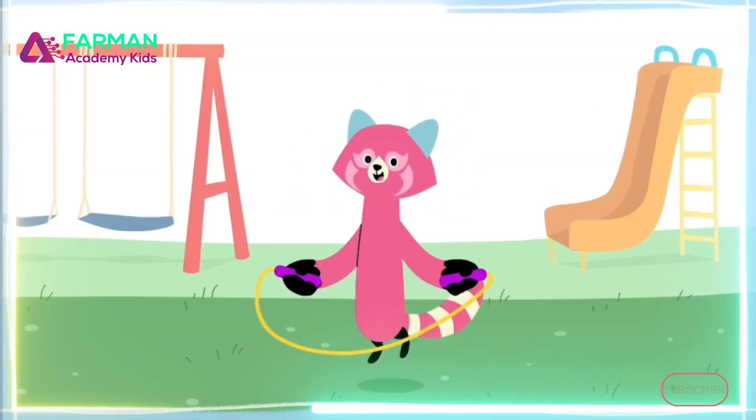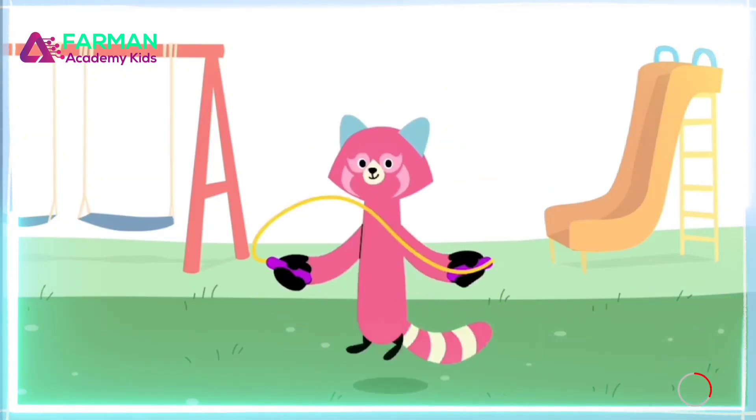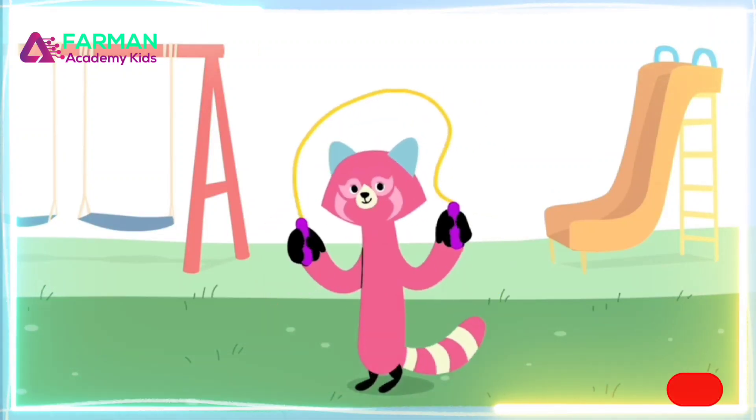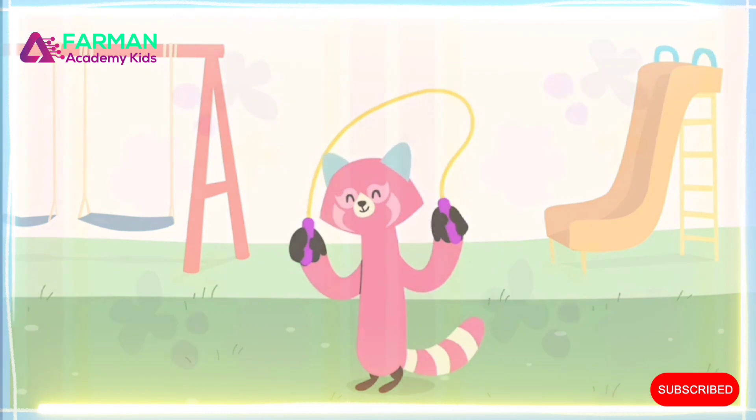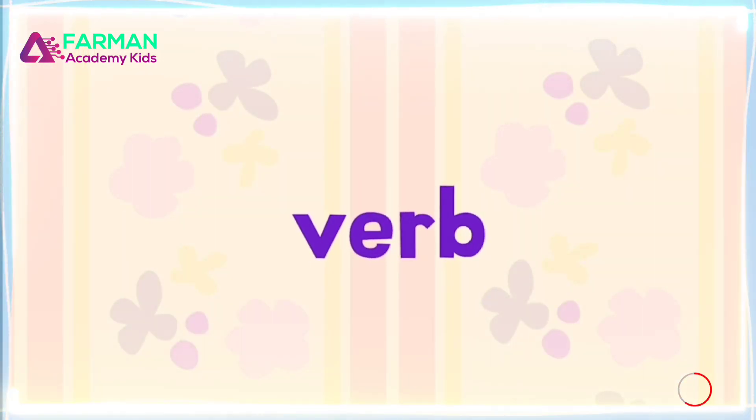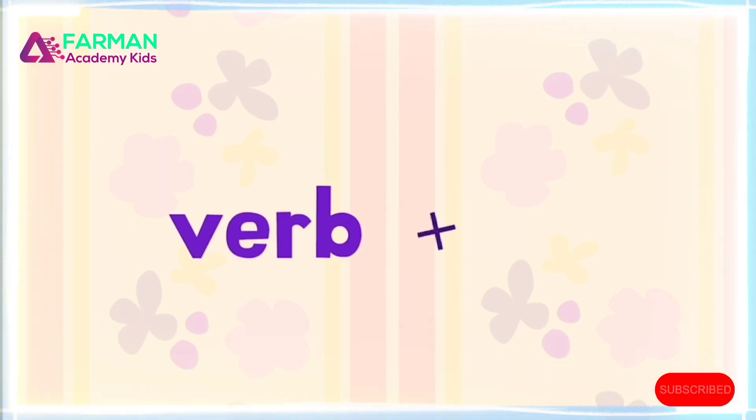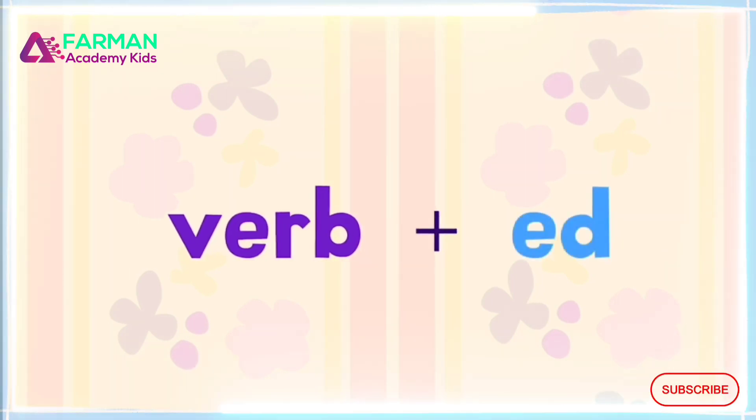Verbs, like jump, change to show when you are doing something. When we're talking about an action that already happened, we usually take the verb and add ed.